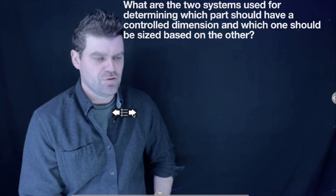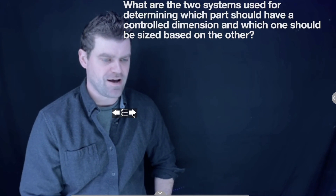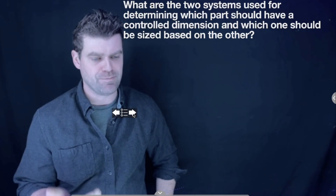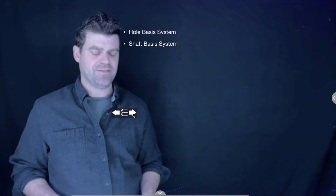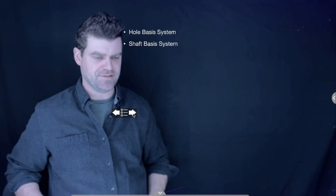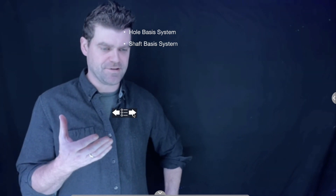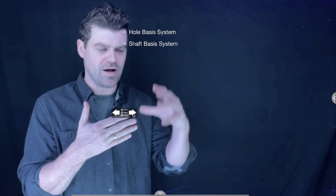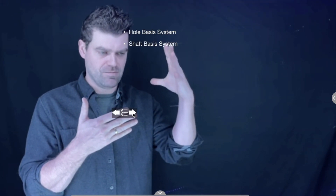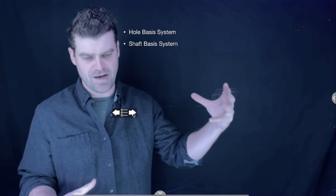The next question is: what are the two systems used for determining which part should have a control dimension and which should be sized based on the other? The answer is the hole basis system and the shaft basis system. In a hole basis system, you drill the hole to a set size — say two inches — and then apply the tolerance to the shaft to achieve the desired fit. The shaft basis system means you have a fixed shaft size and machine the hub to match it.